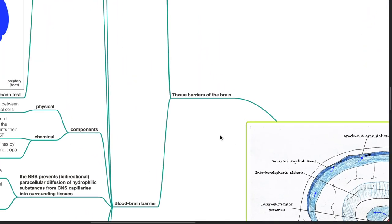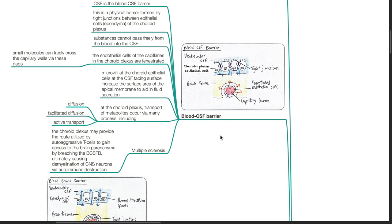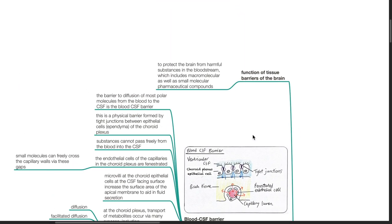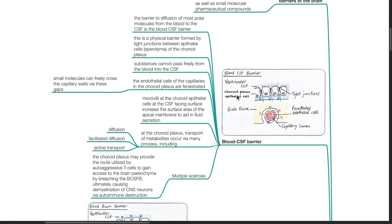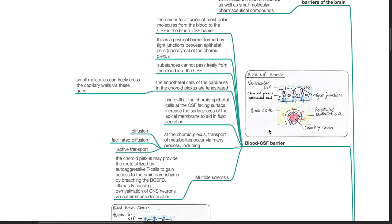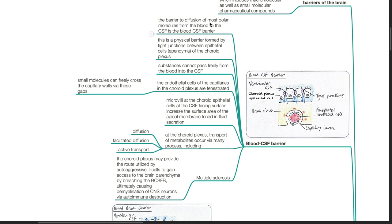Tissue barriers of the brain function to protect the brain from harmful substances in the bloodstream, which includes macromolecular as well as small molecular pharmaceutical compounds. The blood CSF barrier. The barrier to diffusion of most polar molecules from the blood to the CSF is the blood CSF barrier. This is a physical barrier formed by tight junctions between epithelial cells, ependyma, of the choroid plexus. Substances cannot pass freely from the blood into the CSF.